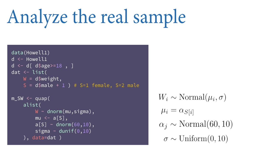Now let's analyze the real sample where we don't know the right answer, but we feel confident this is the proper estimator given the assumptions sketched in the DAG and programmed into the generative model. The code is identical to before — we set up the sample, construct the s variable by adding one to the male variable, and look only at adults.